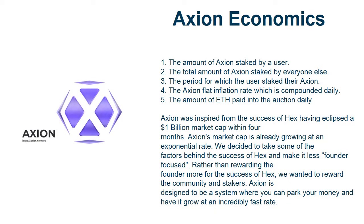Axion Economics: Axion generates interest through the idea of inflation. The Axion smart contract pays out Axion based on 5 basic principles: 1. The amount of Axion staked by a user. 2. The total amount of Axion staked by everyone else. 3. The period for which the user staked their Axion. 4. The Axion flat inflation rate, which is compounded daily. 5. The amount of ETH paid into the auction daily.